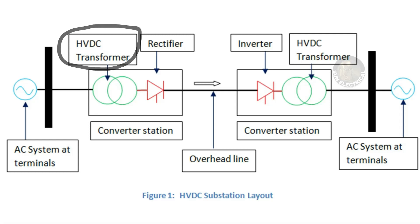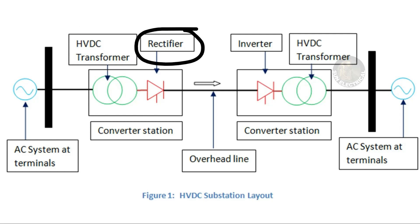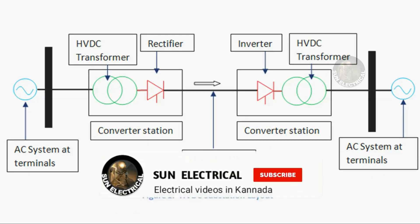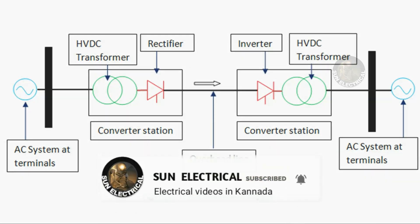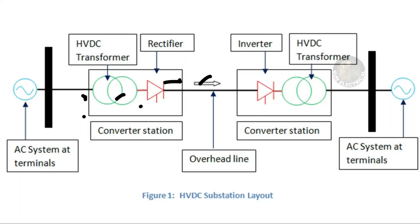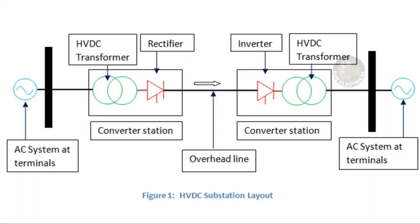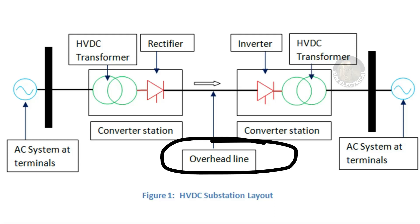There is an HVDC transformer. There is a rectifier. So there is also AC and DC. For example, there is a rectifier — this is the mobile charger example of AC to DC conversion.